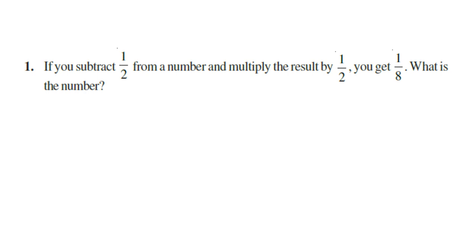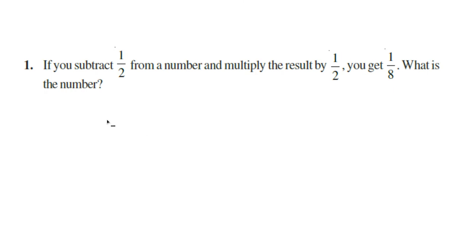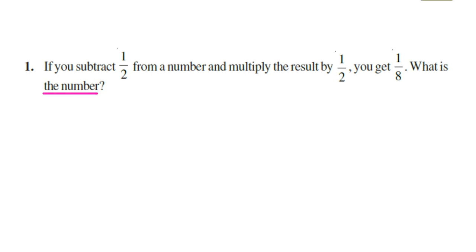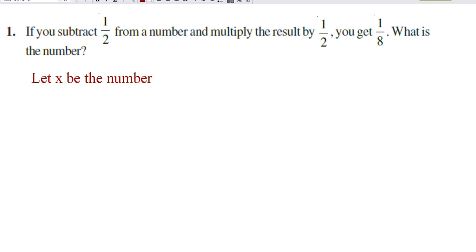Here is the first question. If you subtract 1/2 from a number and multiply the result by 1/2, you get 1/8. What is the number? First, check what you want to find out — you want to find out the number. Since we don't know the number, we can take it as x. So we can write: let x be the number.